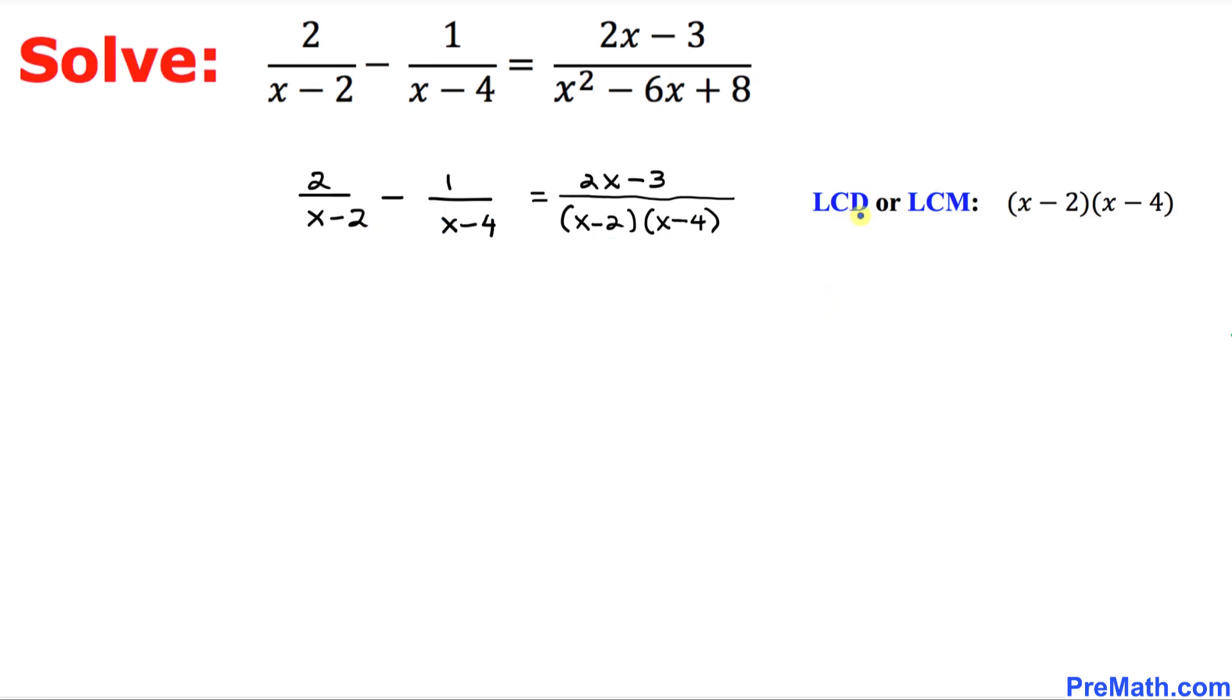So that means the least common denominator, or sometimes we call it least common multiple, is x minus 2 times x minus 4. Here you can see that x minus 2 is showing up twice, so we are going to write it down just once. And likewise, x minus 4 is showing up twice, so we are going to write it just once.